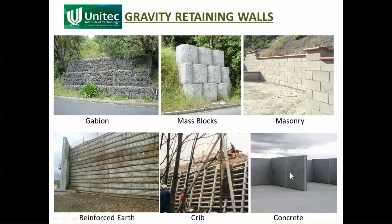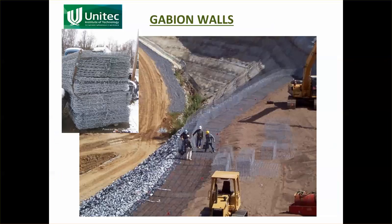Different types of gravity retaining walls include gabions, mass blocks, masonry walls, reinforced earth, crib walls, and concrete walls. They all rely on their own weight to provide stability for the soil.